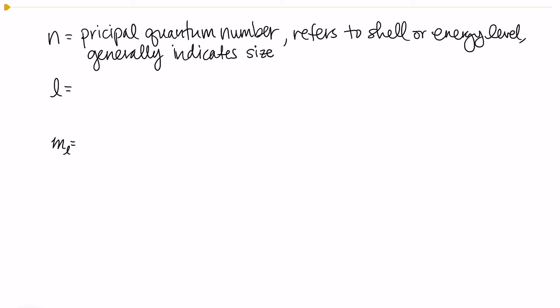The second one is our angular momentum quantum number, and this one is going to refer to the shape of the orbital like s, p, d, or f. So the quantum number l equals zero is the same as saying s, l equals one is the same as saying p, l equals two is the same as d, etc.